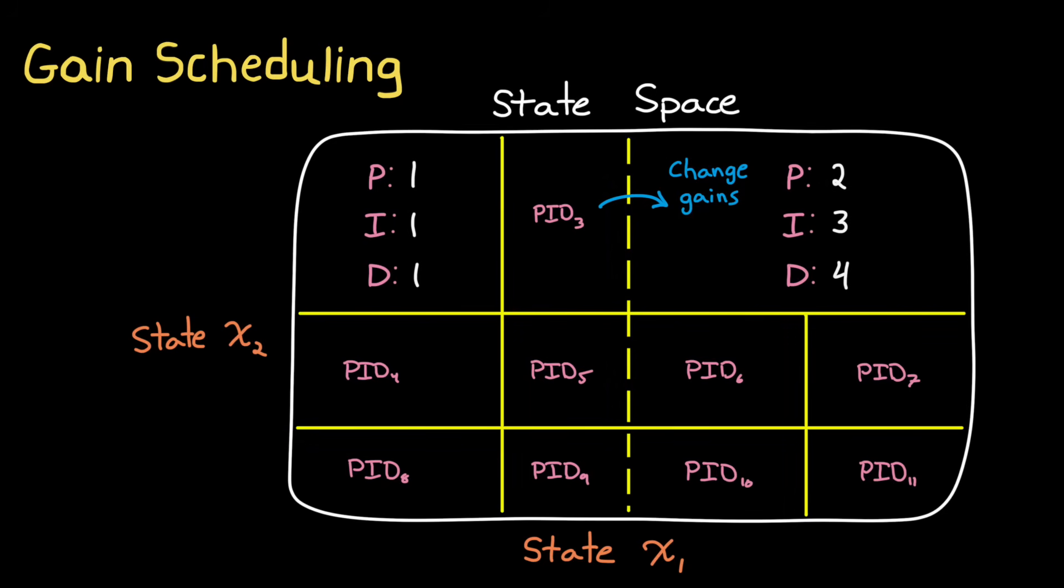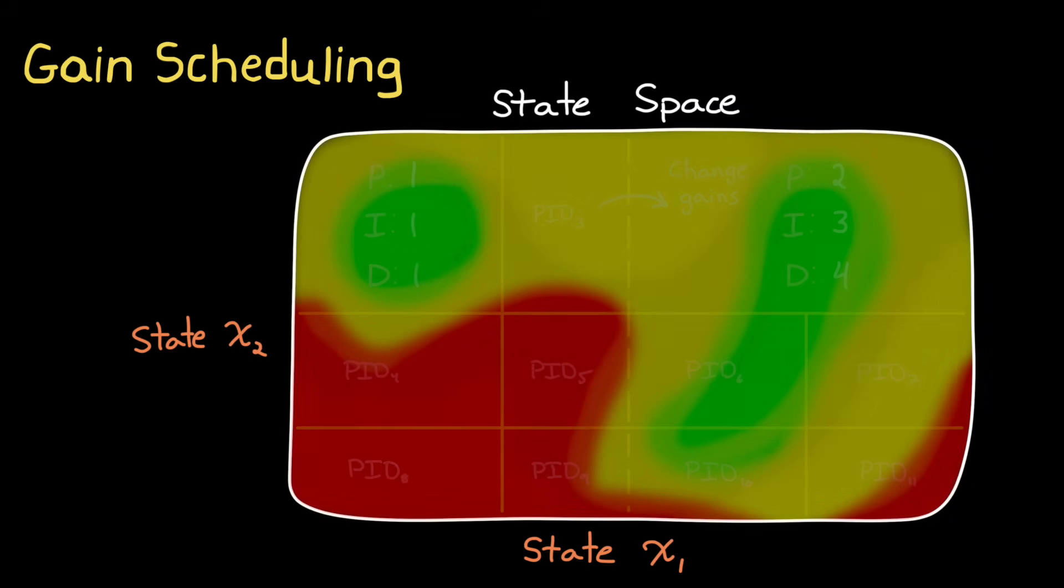And instead of discrete gain sets, you can smoothly interpolate between each set so that the gains are always continuously adjusting as the state of the system changes. In this way, you can have a linear controller that can operate robustly over the entire non-linear range.